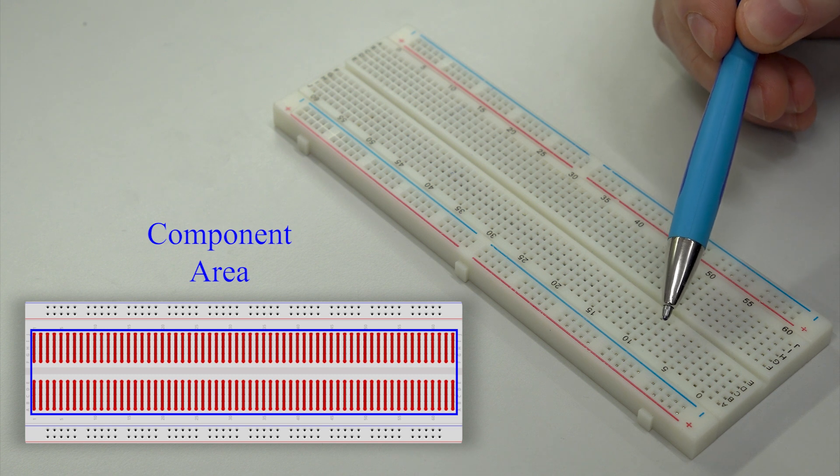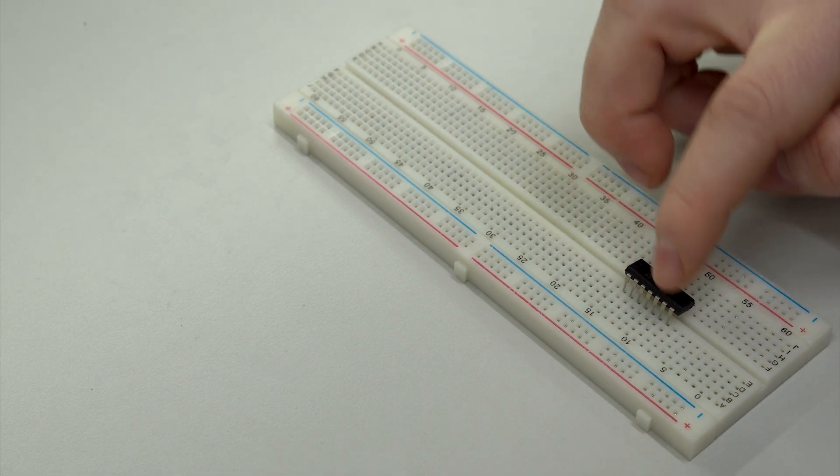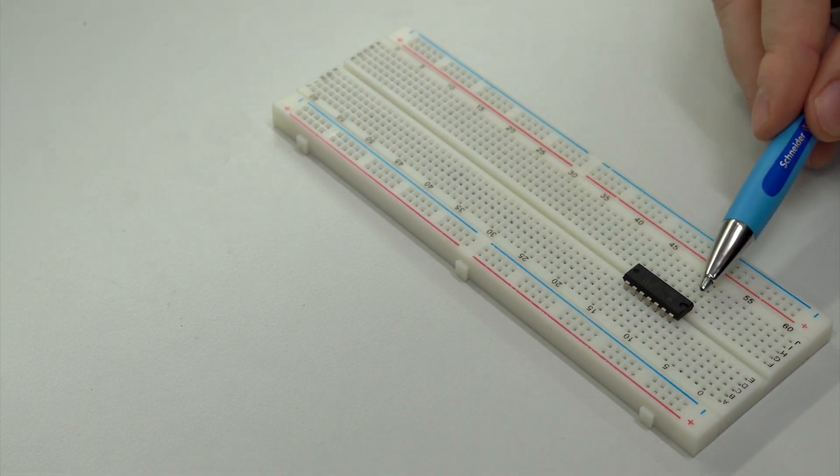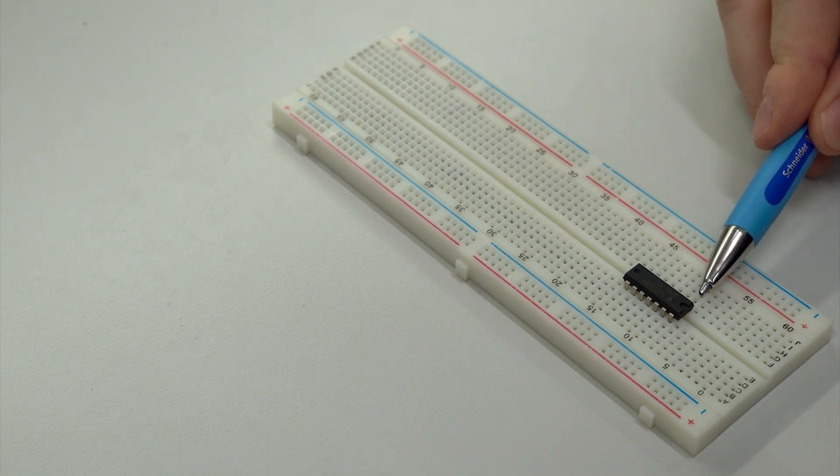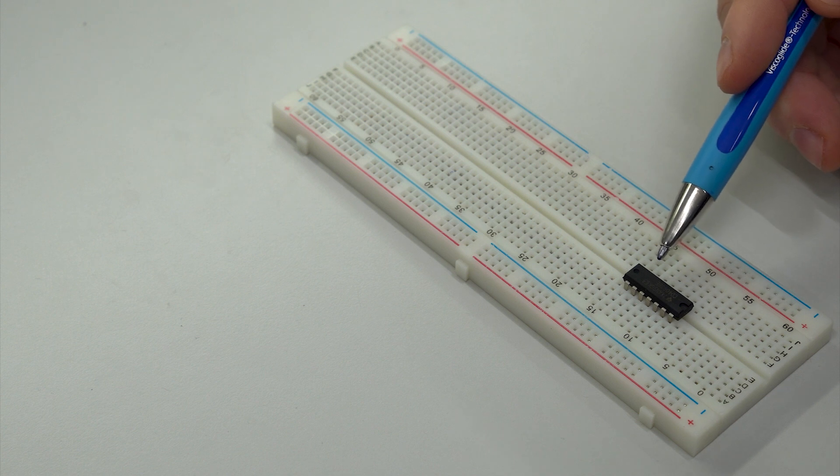This makes the use of ICs with this breadboard possible. So if we place an IC, the legs on the upper and the lower side are not electrically connected. Otherwise, one could not use an IC with a breadboard.